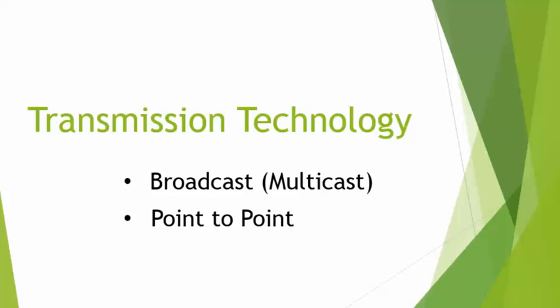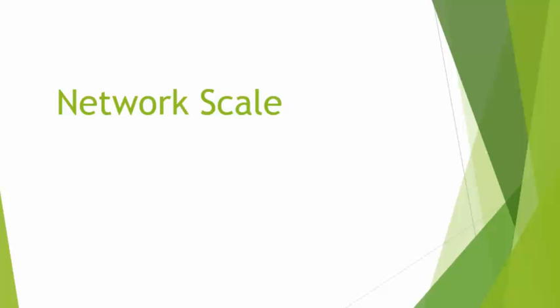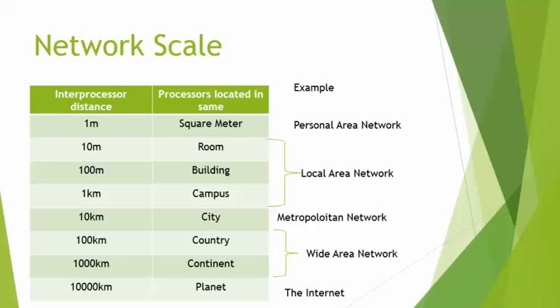Another thing to cover in the introduction to computer networks is network scale. We can classify networks by different factors; one of those factors is scale — how big your network is. For example, a one-meter scale network, covering roughly one square meter, is called a Personal Area Network or PAN. A perfect example of this is Bluetooth.